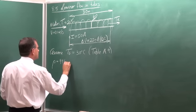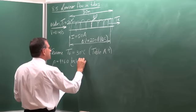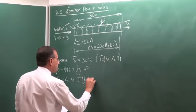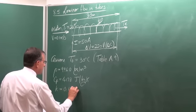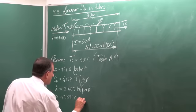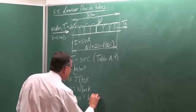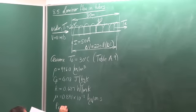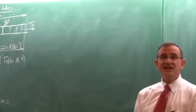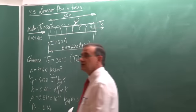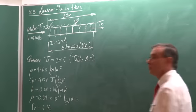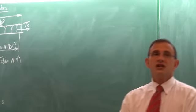Let's assume 30 degrees Celsius and from table A9 we get all the properties. The density is 996.0 kg/m³, CP is 4178 J/(kg·K), k is 0.607 W/(m·K), the viscosity is 0.891 × 10⁻³ kg/(m·s), and the Prandtl number is 6.14.